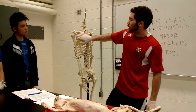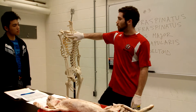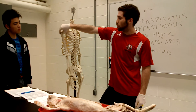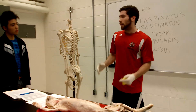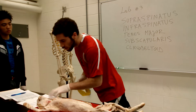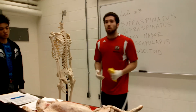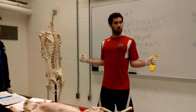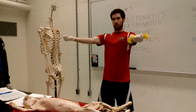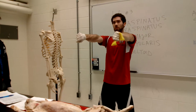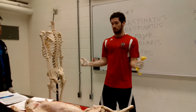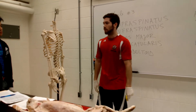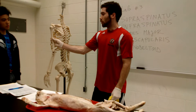Infraspinatus originates from the infraspinous fossa — below the spinous process — and also inserts on the greater tubercle of the humerus. It stabilizes the shoulder joint and externally (laterally) rotates the humerus. So if you're standing and rotating your arm outward to the side, that's infraspinatus. Internal or medial rotation is the opposite movement.